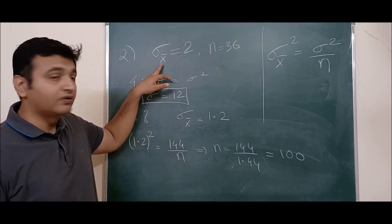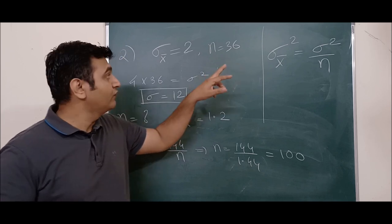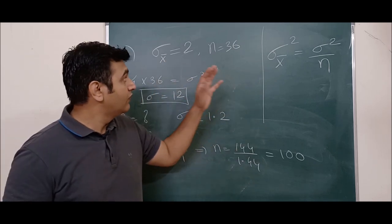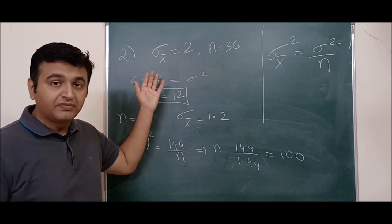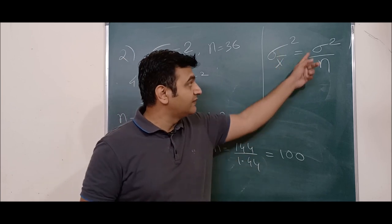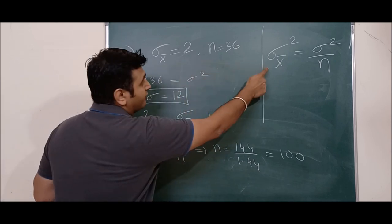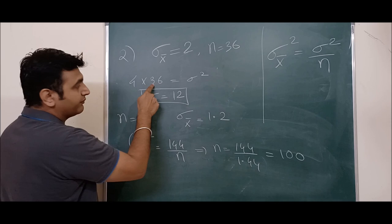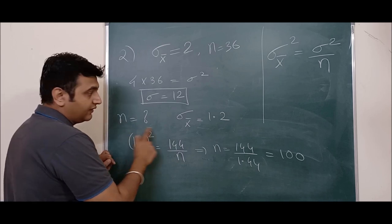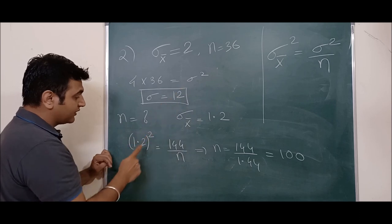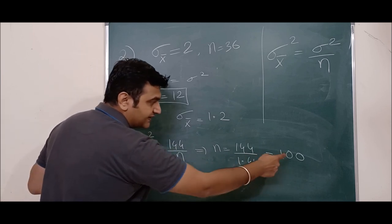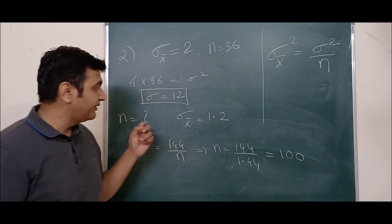Given: standard deviation of the sample mean is 2, sample size is 36. Using the central limit theorem, variance of x̄ = sigma squared / n. So sigma squared = 4 × 36 = 144, meaning sigma = 12. Now, if the standard deviation of x̄ is 1.2, then 1.2² = 144 / n, giving n = 144 / 1.44 = 100. The sample size must be increased to 100.